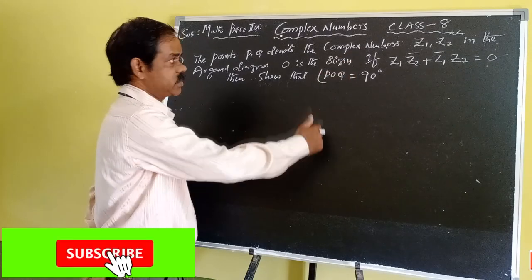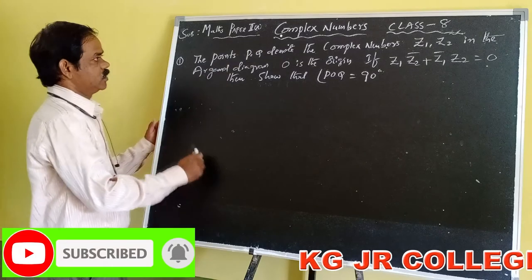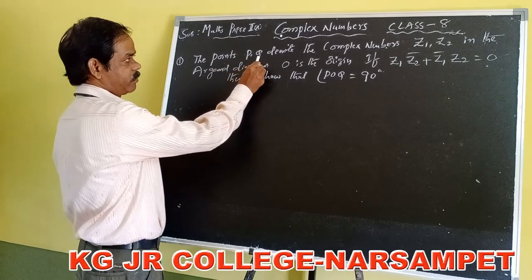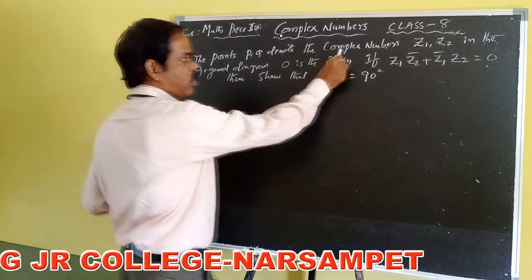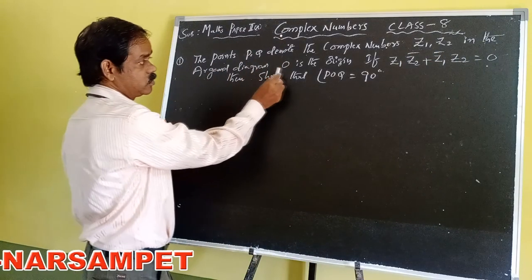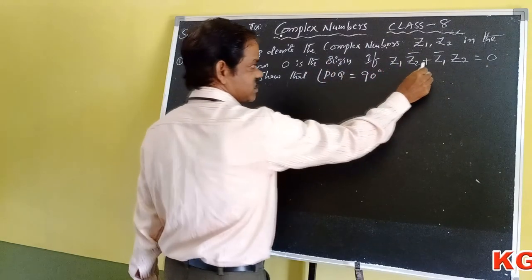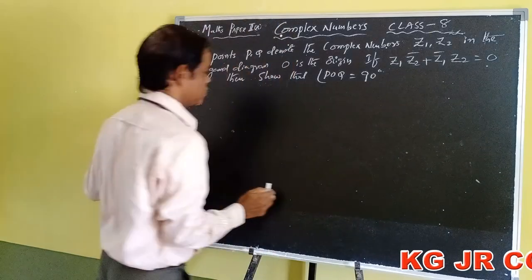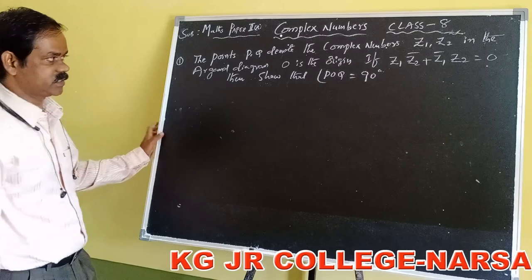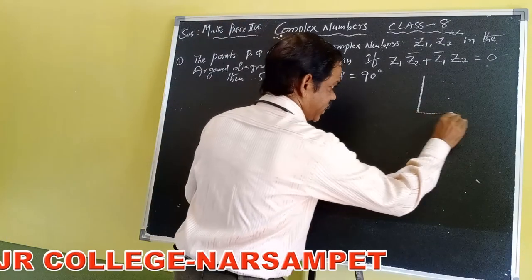Good morning friends. Today is class 8 on complex numbers — this is the last class on the complex numbers chapter. The first problem: let capital P and capital Q denote the complex numbers Z1 and Z2 in the Argand diagram, where O is the origin. If Z1·Z2̄ + Z1̄·Z2 = 0, then show that angle POQ equals 90 degrees, meaning it is a right angle triangle.